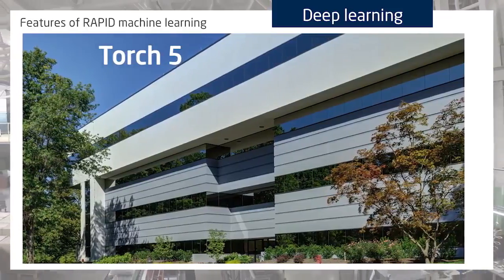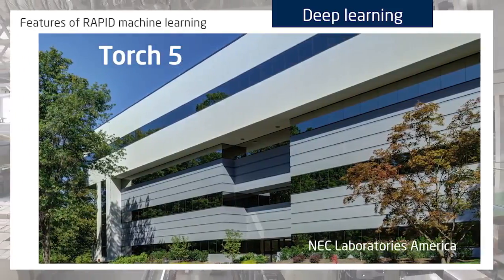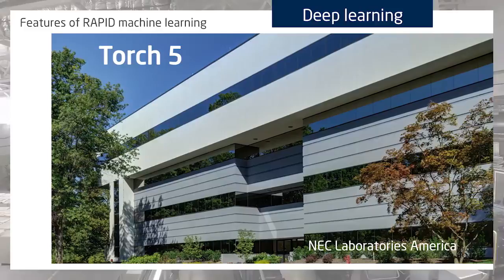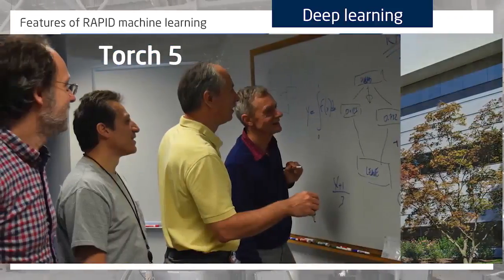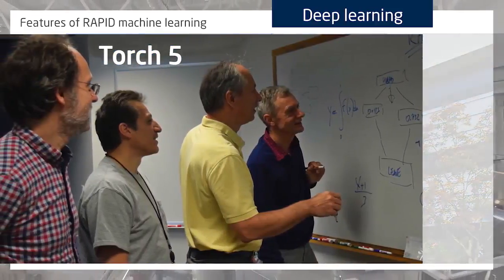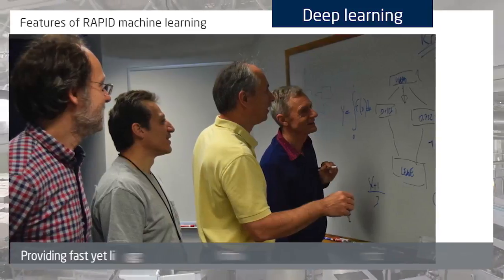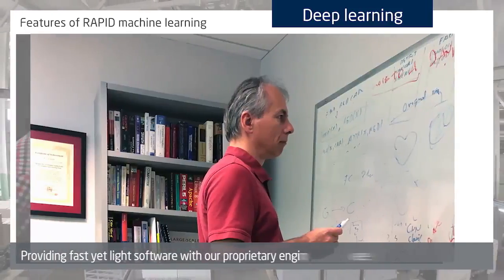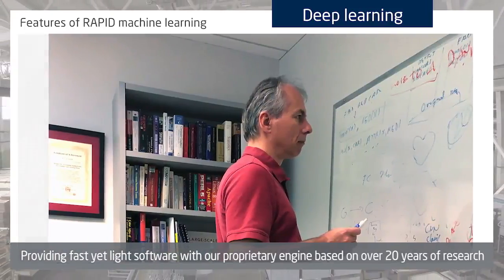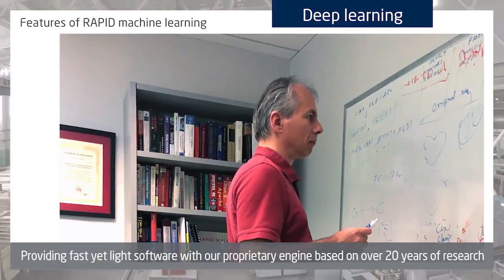Torch5 is currently a well-known open-source framework for deep learning that was developed by NEC Laboratories America. Rapid Machine Learning has been built based on Torch5. NEC provides fast yet lightweight software with our proprietary engine based on over 20 years of research.